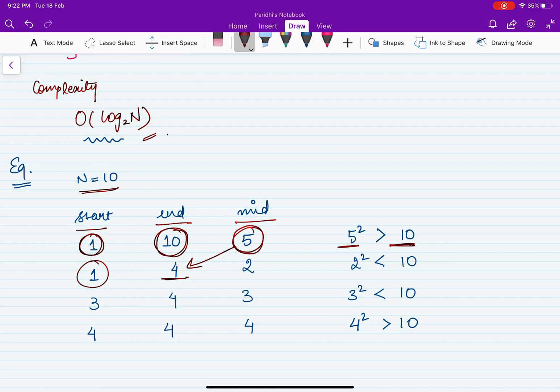Mid is equal to 2. Now 4 is less than 10, so we will move to our right and start will become mid plus 1 and end will remain same. Now mid is 3. 3 square is less than 10.